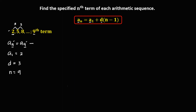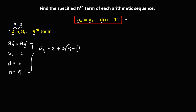Then substitute these values into the formula. So we have a sub 9 equals a sub 1, and a sub 1 is positive 2, plus the common difference, that's 3, times n — n is 9 — then minus 1. Then simplify: so we have 2 plus 3 times 9 minus 1, that's 8.